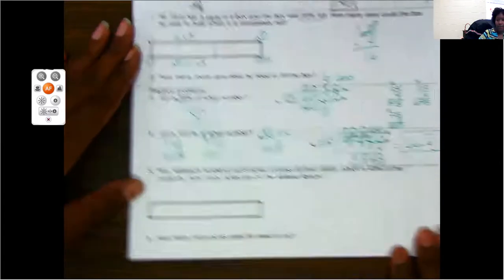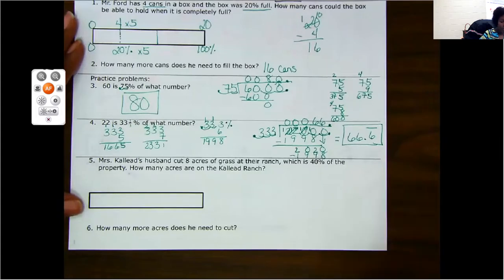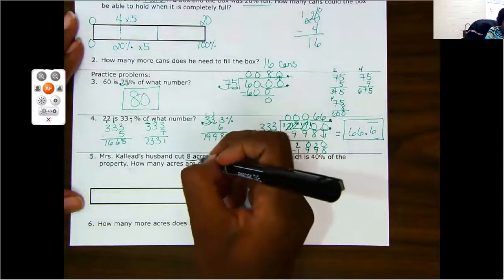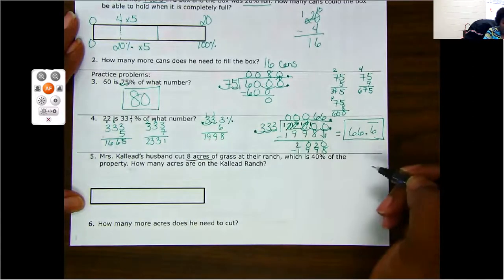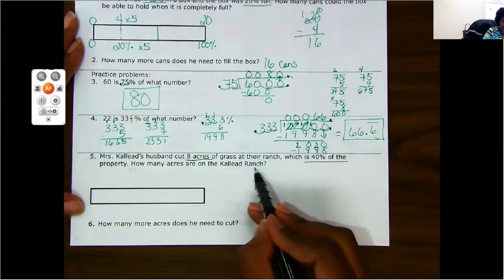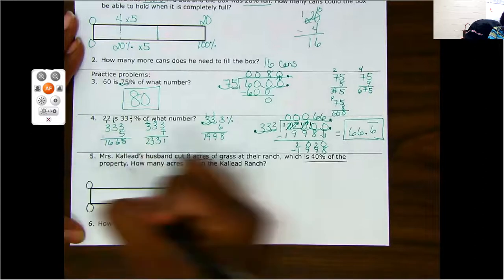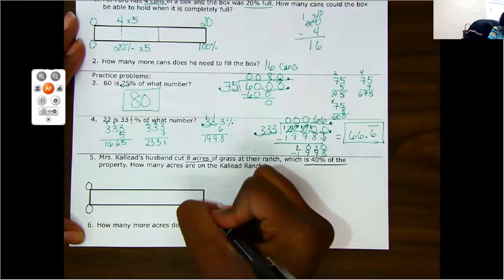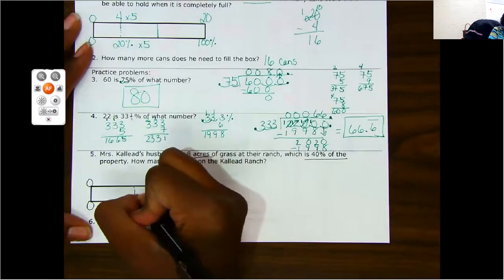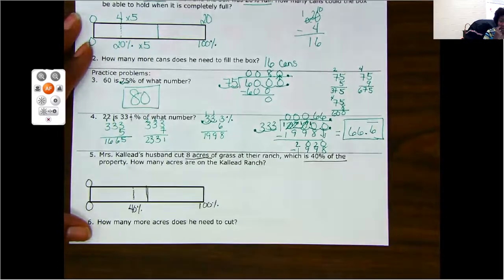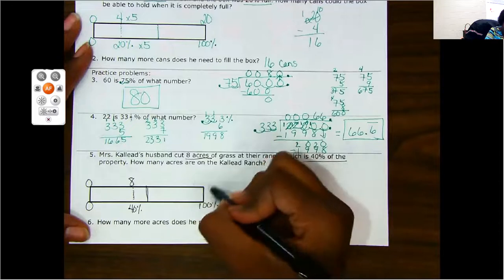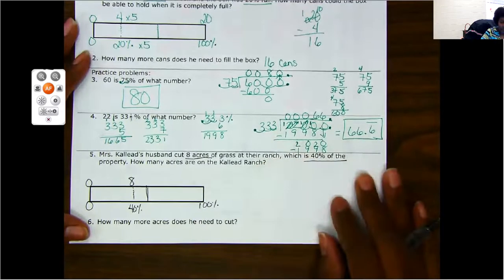Okay. Alright, let's try one more with the percent bar. Mrs. Callet's husband cut eight acres of grass at their ranch, which is 40% of the property. How many acres are on Callet ranch? So again, my percents go at the bottom. I have 40%. Let's say this is halfway. So we're going to say 40% is right here. And they said that this is eight acres.